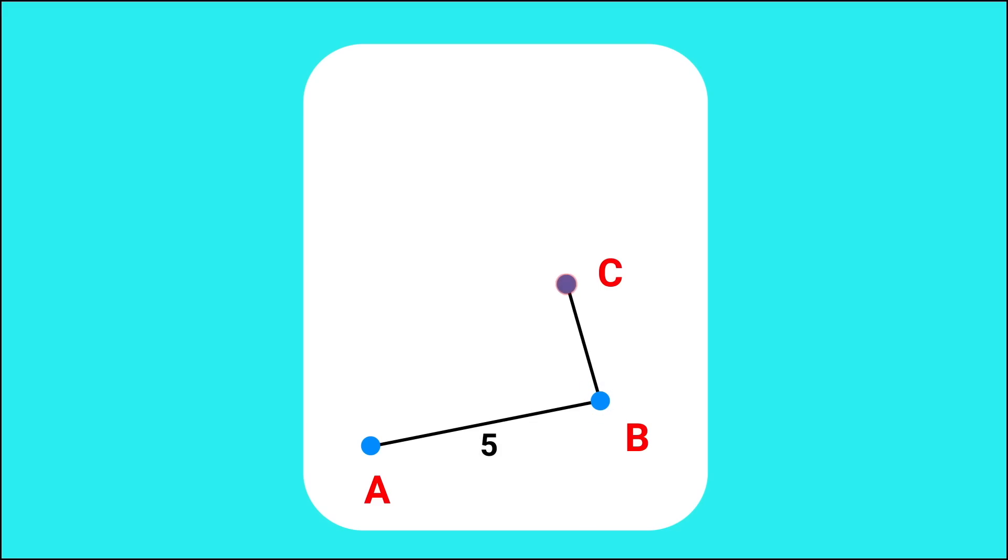B is then closest to C, and thus that distance must be something less than 5. Now, in order for a triangle to form, C would have to connect to A, meaning that A is the closest point to C, and thus a distance of something less than 4 away.